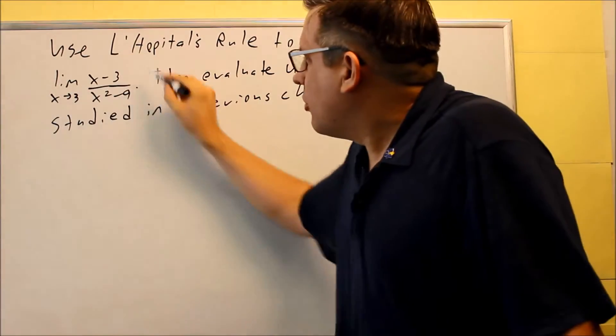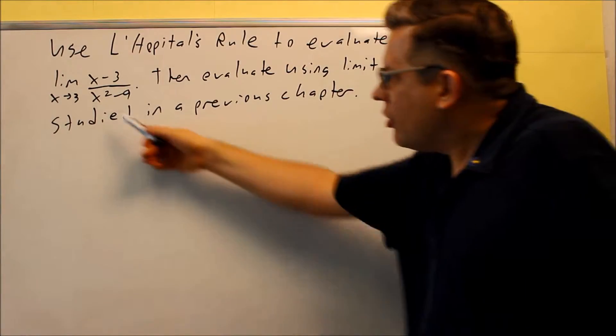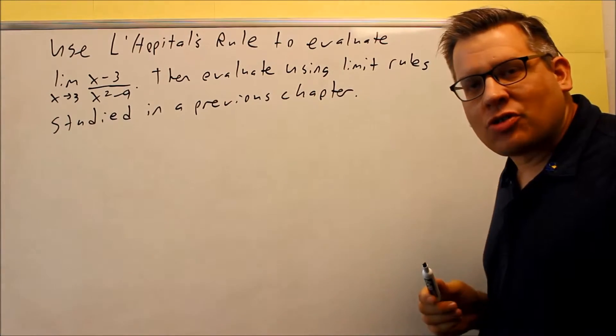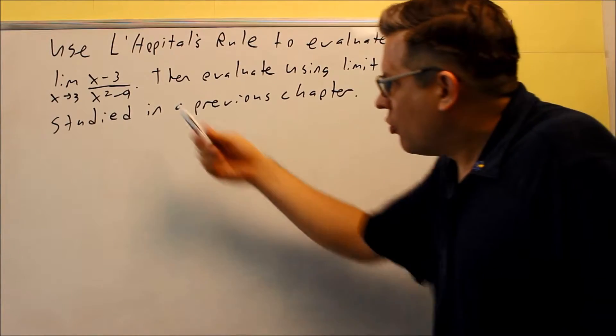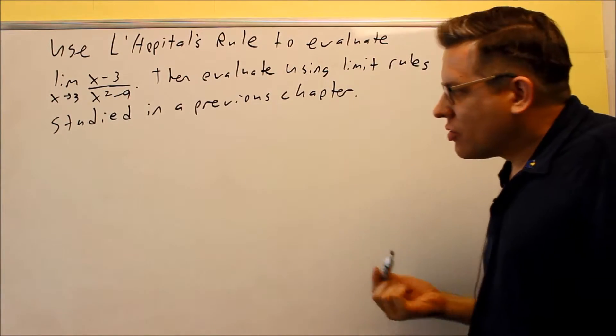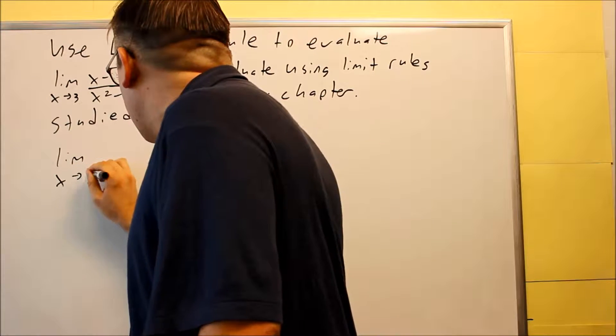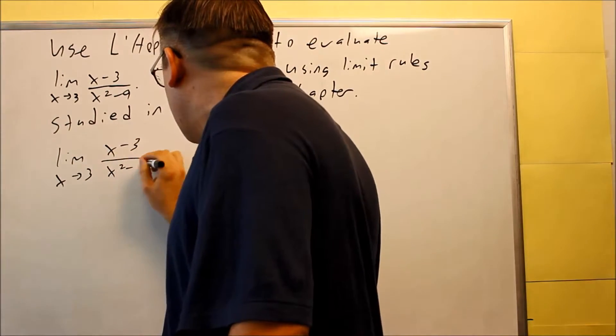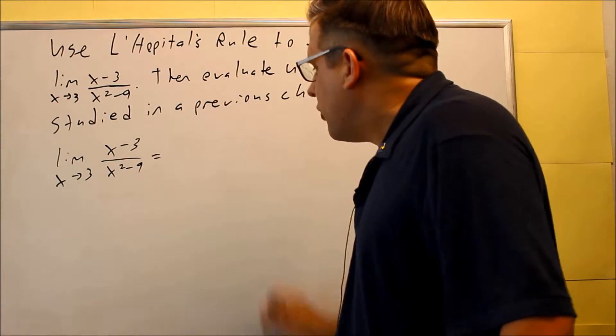Here's the limit we have to do. First, you want to check to make sure that L'Hôpital's can be applied here. You need to put 3 in, the top and bottom. You need to get a 0 over 0 situation happen. That tells you you're able to use L'Hôpital's Rule, and we can in this case. So I'm going to start with this limit: x goes to 3 of x minus 3 over x squared minus 9. What I can do is keep taking the derivative.